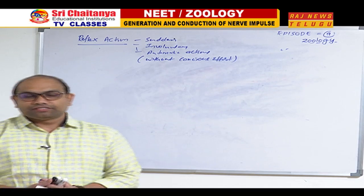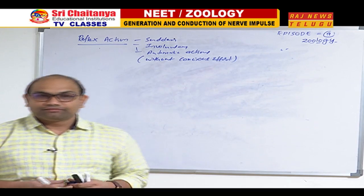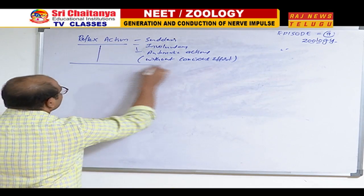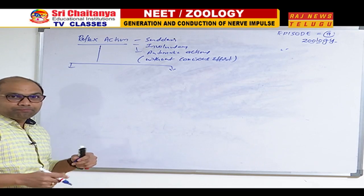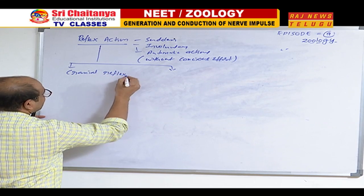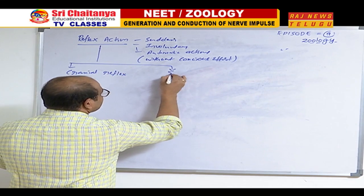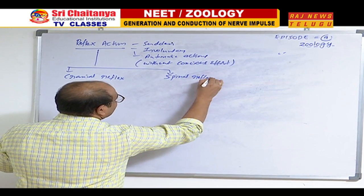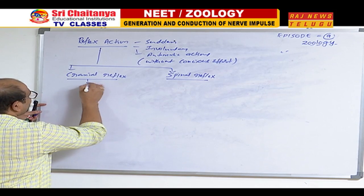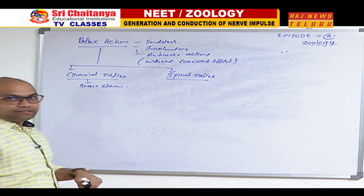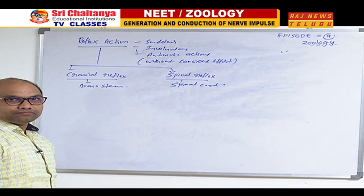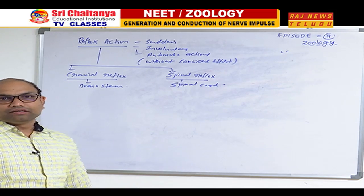There are different types of reflex actions. Some reflex actions are controlled by our brain and some by our spinal cord. Depending on that, we can divide reflex actions into two types based on the part that controls them. One is cranial reflexes and the second is spinal reflexes. Cranial reflexes are controlled by the brain stem; spinal reflexes are controlled by the spinal cord.